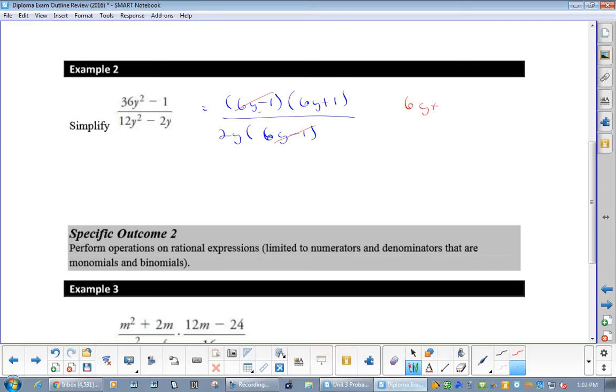I get 6y plus 1 over 2y. Okay, y cannot equal 0, and what's the other one? 1 over 6, right? 1 sixth is bad there.